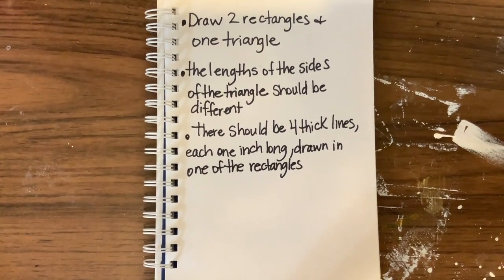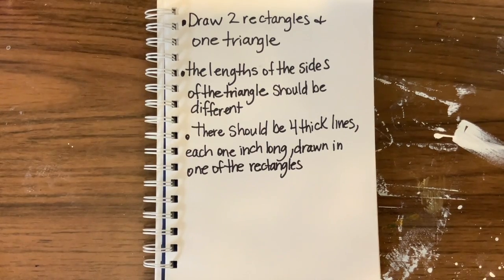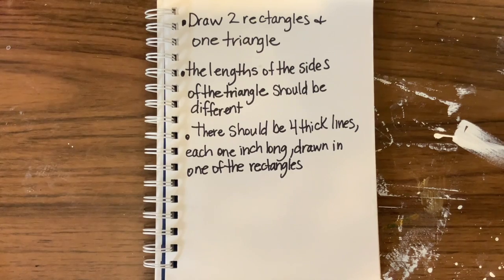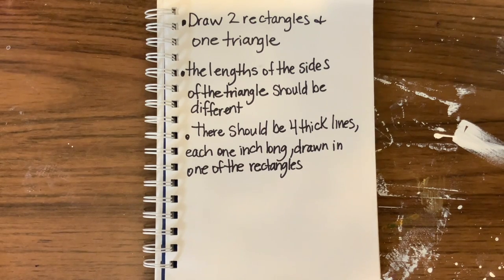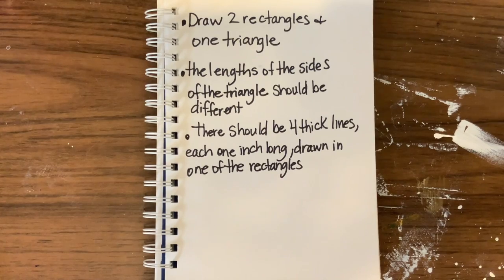Your beginning assignment for this project has some very specific instructions. We're going to start together by drawing two rectangles and one triangle anywhere on your page — that's up to you. The lengths of the sides of the triangle should be different, and there should also be four thick lines, each one inch long, drawn in one of the triangles. So take a moment, follow these instructions, and draw this directive.